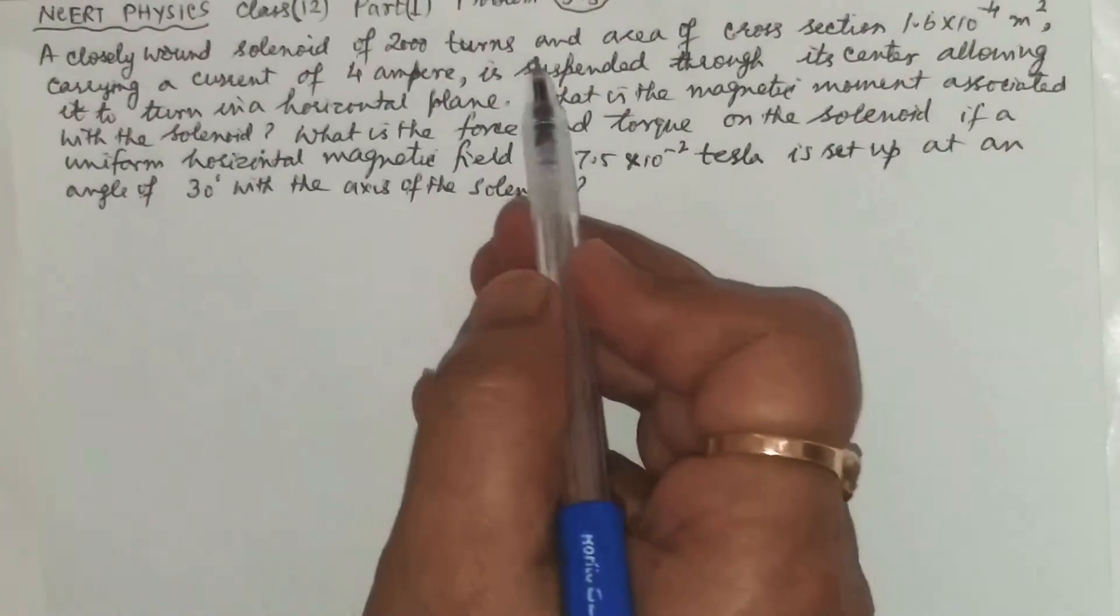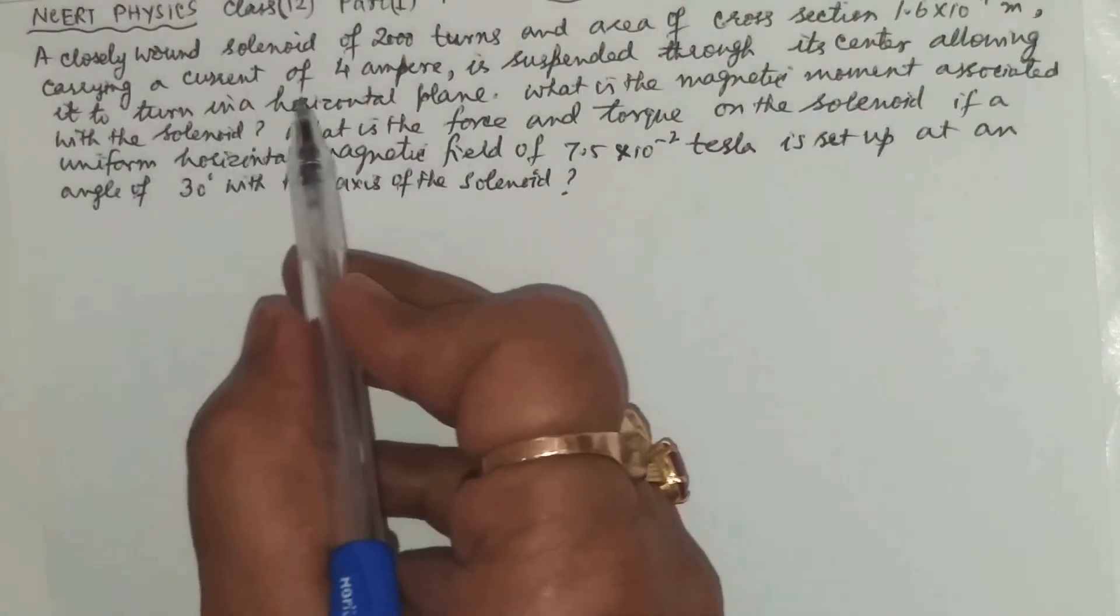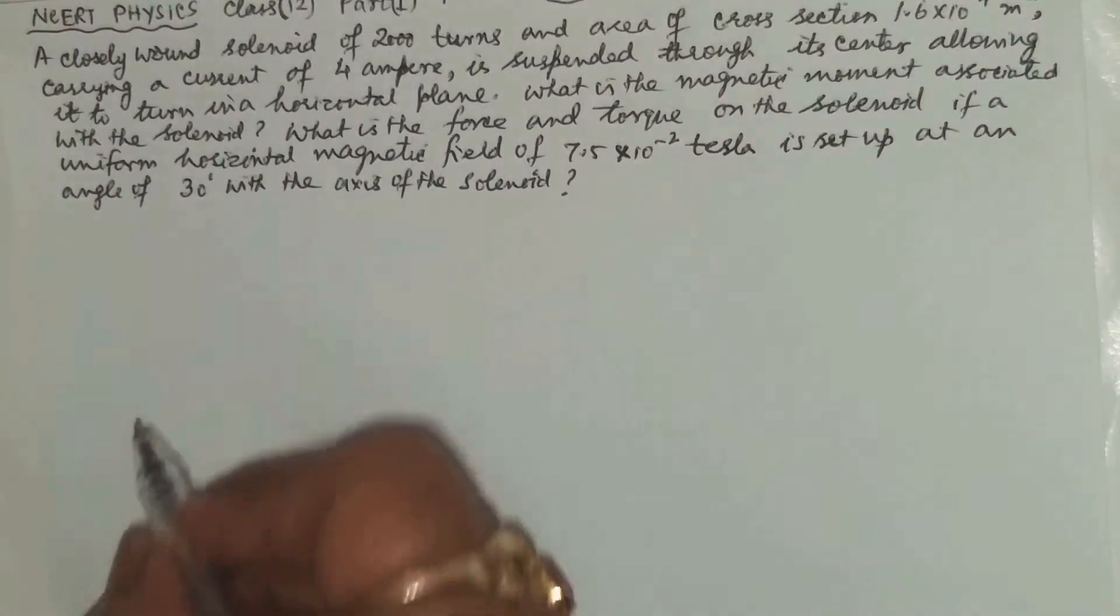A closely wound solenoid of 200 turns in area of cross section is also given and it is carrying a current of 4 ampere and that is suspended through the center allowing it to turn in a horizontal plane.